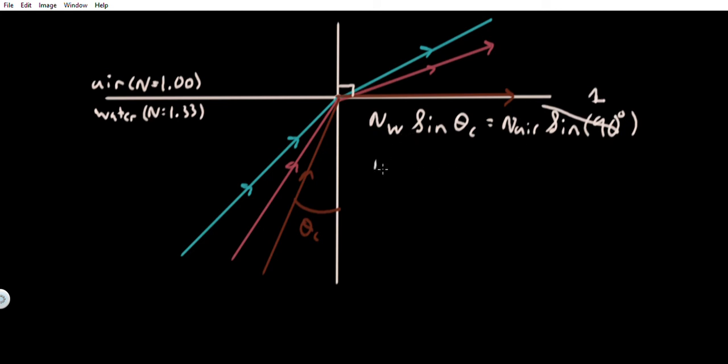Now this can be simplified to: the index of refraction of water times the sine of theta sub c must equal the index of refraction of air. Now I can solve for sine of theta sub c. And what do I get? I get that that's equal to—I can plug in values now—